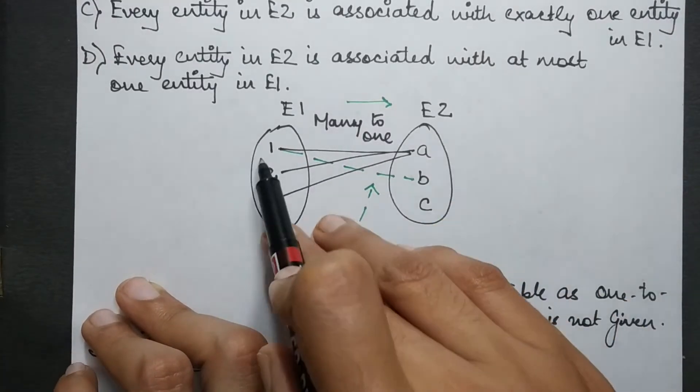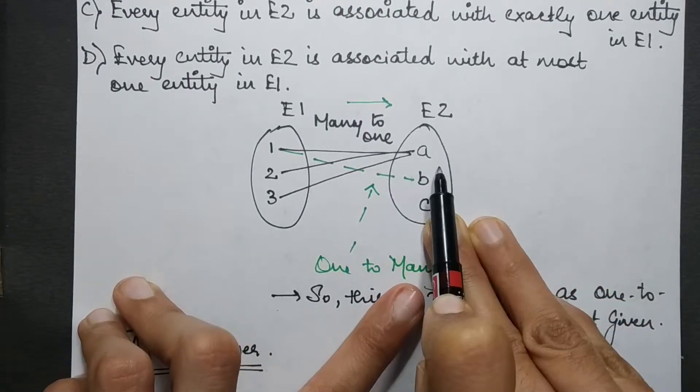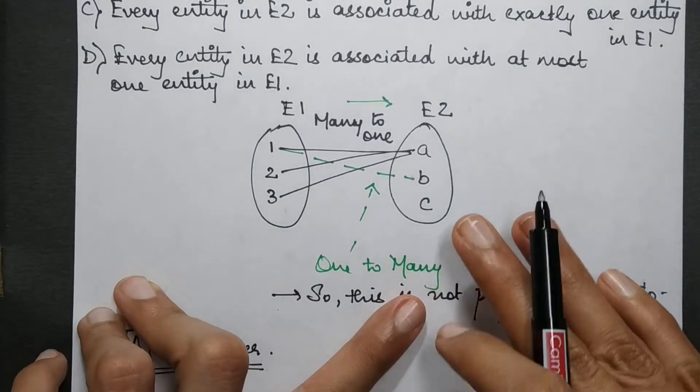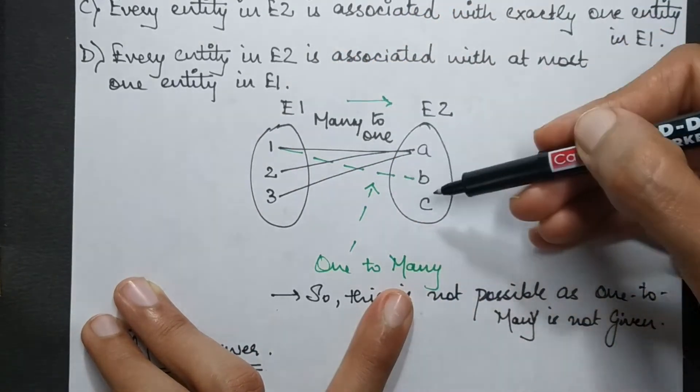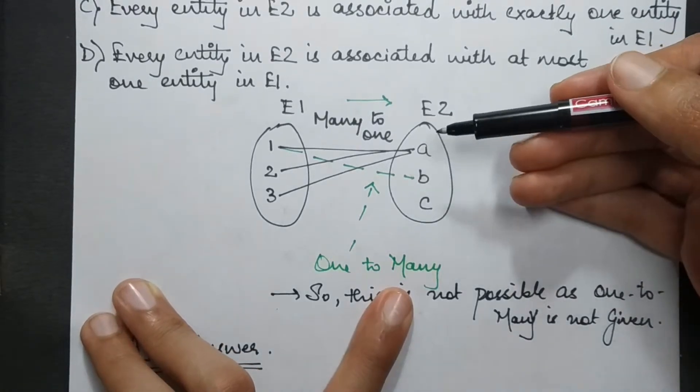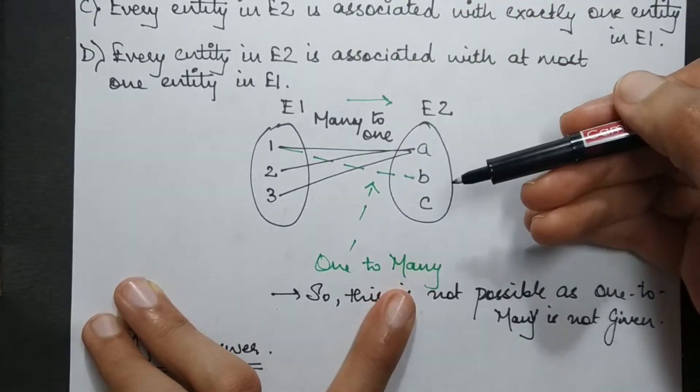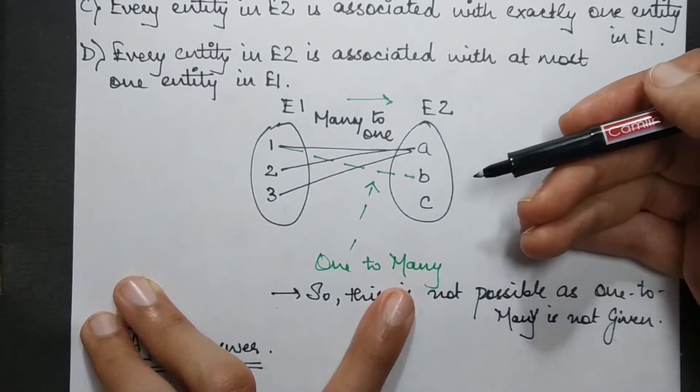Many-to-one because 1, 2, 3 all are going to A. So this is many-to-one. And now if I just try to map this one with B as well, then it will become what? It will become one-to-many. So this is not possible because this is not given. So what do we have over here?